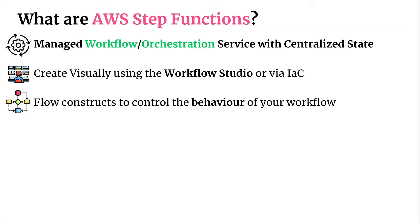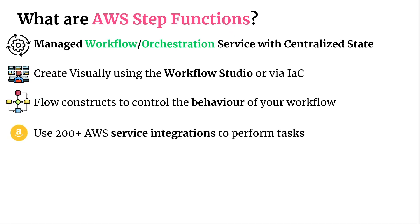What makes Step Functions special over things like Apache Airflow is that you get direct integration with over 200 AWS services to perform tasks. Tasks are where you perform the bulk of the work in Step Functions. It allows you to call a variety of different AWS services and thousands of different APIs across those services without having to write a single line of code. You just provide the input arguments and what you want to do with the result. That's definitely one of the main selling points — the rich integration with the AWS ecosystem.